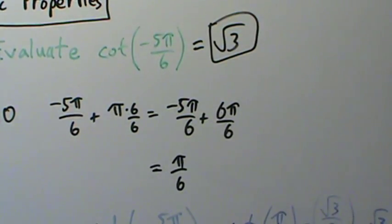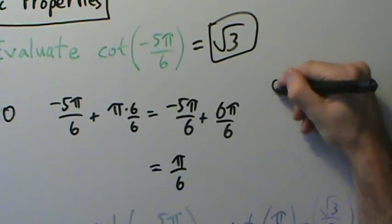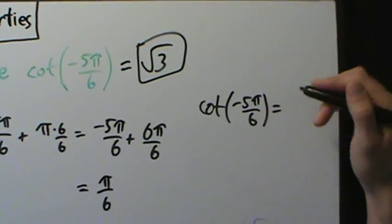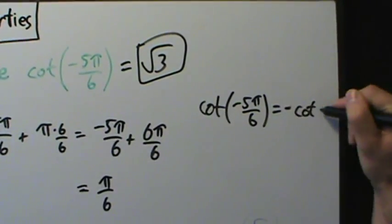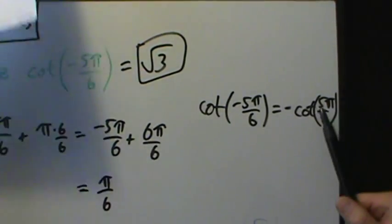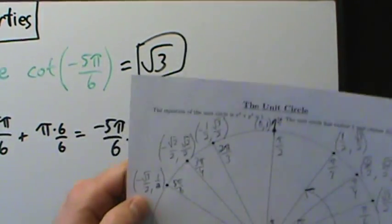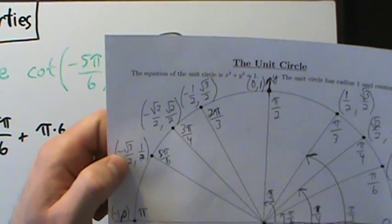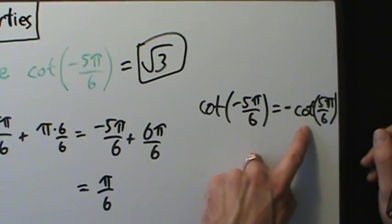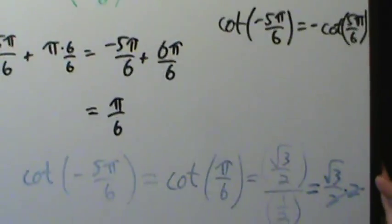We could also have used even-odd properties. Since cotangent is an odd function, cotangent of negative 5π over 6 equals negative cotangent of 5π over 6. Now 5π over 6 is a special angle on the unit circle, so cotangent of 5π over 6 is (−√3/2) over (1/2). With the negative outside, we get negative times negative, so we still end up with √3.